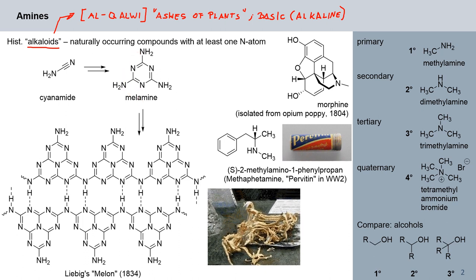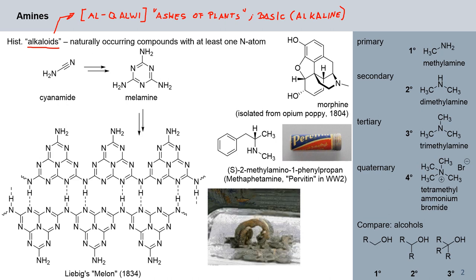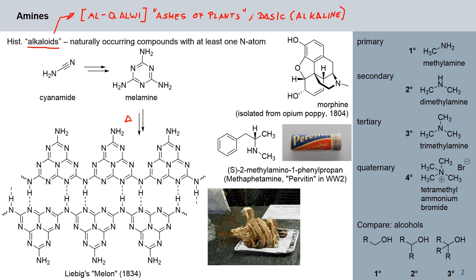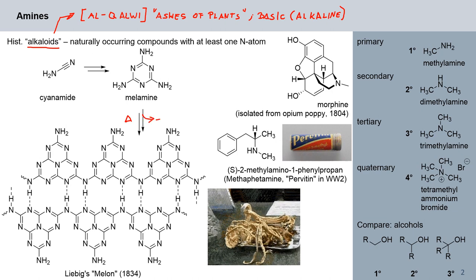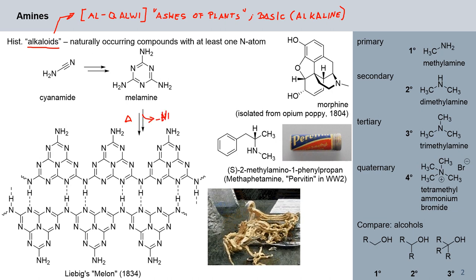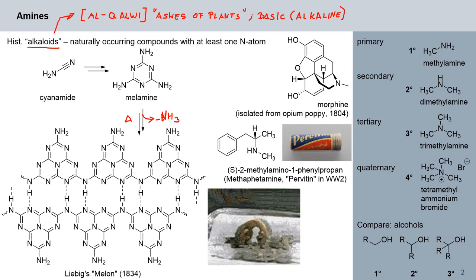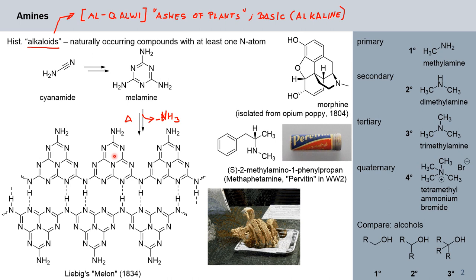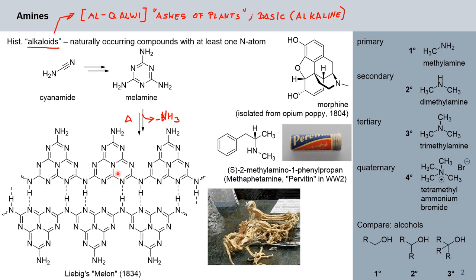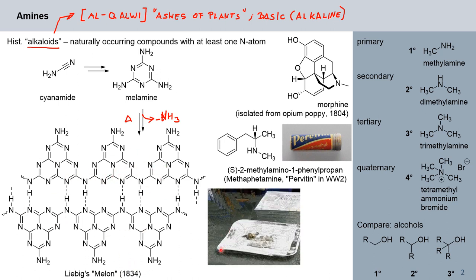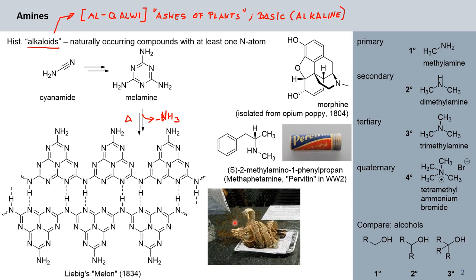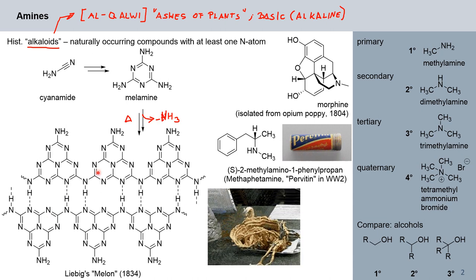Interestingly, if you heat up melamine and its precursors like cyanamide further, there are some other cyclization reactions where you eliminate ammonia and get a compound based on C6N7 ring structures. This reaction was first realized in 1834 by Justus von Liebig and was called melone. You can actually see one such reaction which leads to Liebig's melone structure — the yellow polymer growing here is in fact melone.